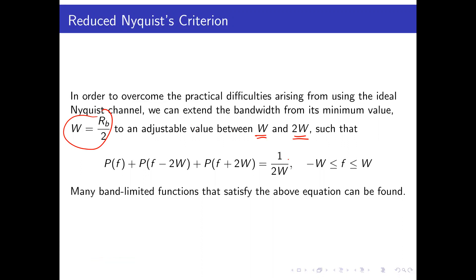This leads us to what we call the reduced Nyquist criteria. Now I want the Nyquist pulse such that the sum of shifted replicas is constant, but I need this condition to hold only for the range of frequencies from negative W to W — the range of frequencies important for the signal.